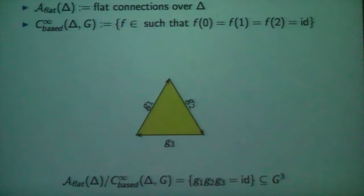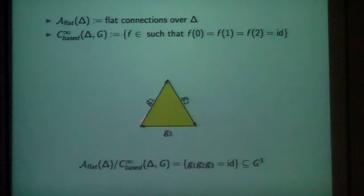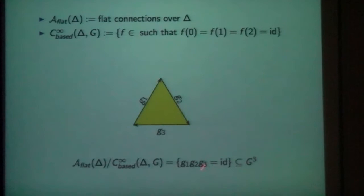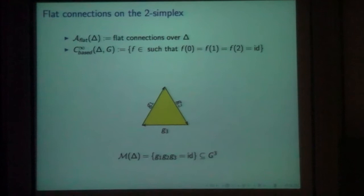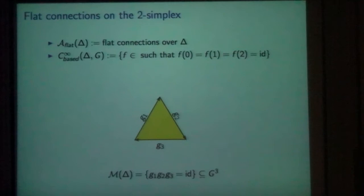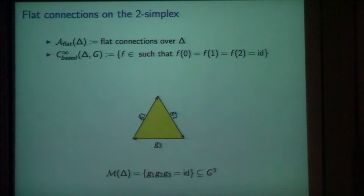This embeds as a subset, not as the full product, because since the connections are flat and the triangle is simply connected, the total holonomy around the edges must be trivial. So it's a subset of three-tuples whose cyclic product is trivial. I'm going to call this the moduli space of flat connections on the triangle, remembering that I'm not acting at the vertices with the gauge transformations. I think of this as a labeled triangle where I've marked those three vertices.